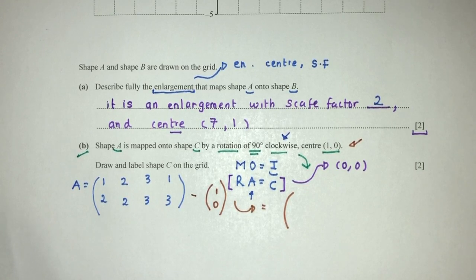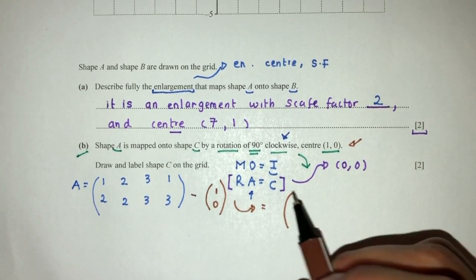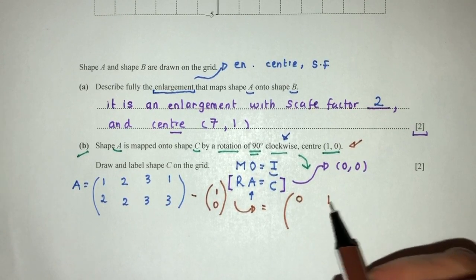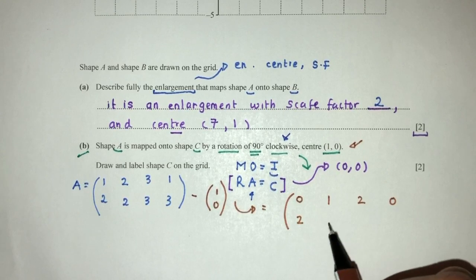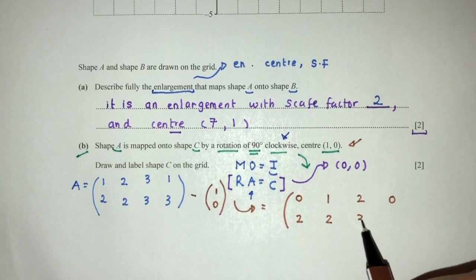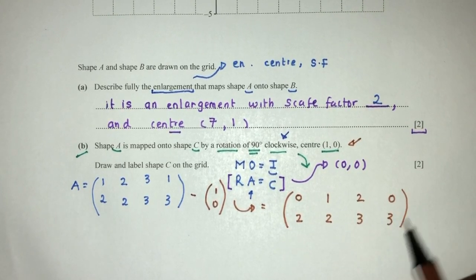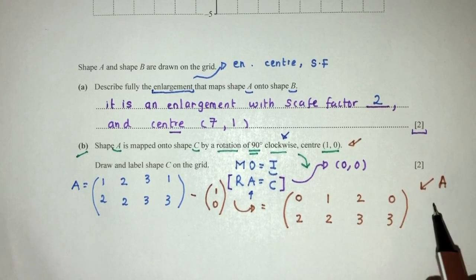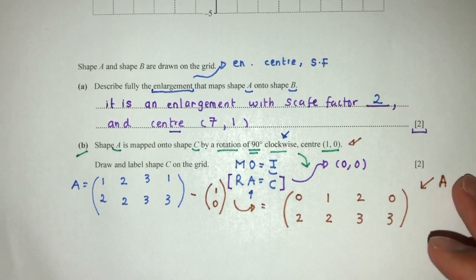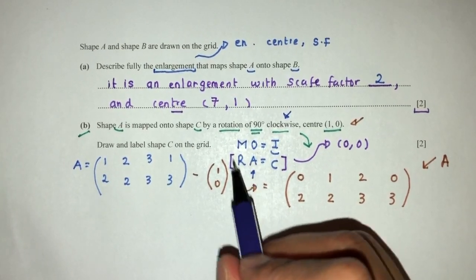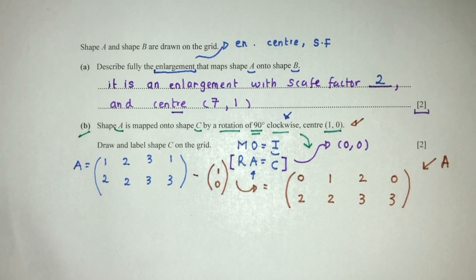Subtracting center (1, 0) from each point of A gives us the adjusted points: (0,2), (1,2), (2,3), and (0,3). This is our new A to use in the equation, because the formula can only be applied when the effective center is (0, 0). Now we need to determine the matrix for rotation 90 degrees clockwise.